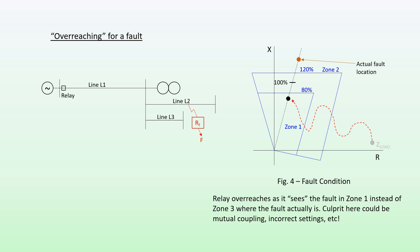Now do note: suppose the fault was within the Zone 1 reach, but due to fault resistance the apparent impedance has moved out to a position further away. The relay still sees the fault further than it actually is, so technically we can say the relay has under-reached. However, from a system point of view, the relay will still operate within Zone 1 time and still operate correctly.